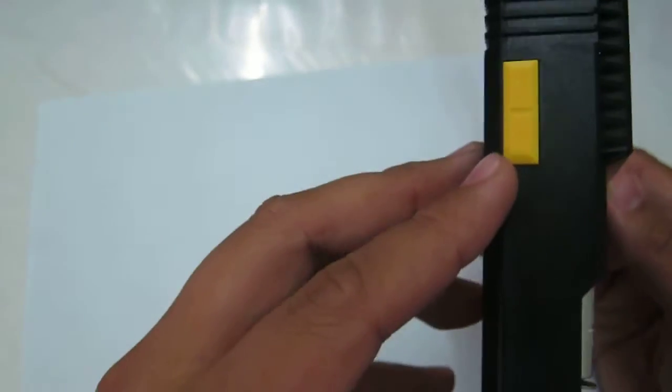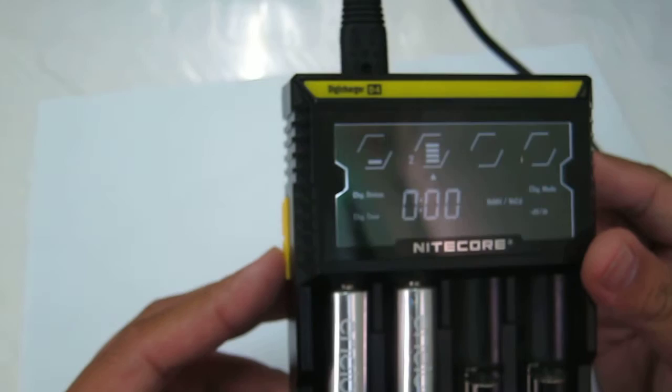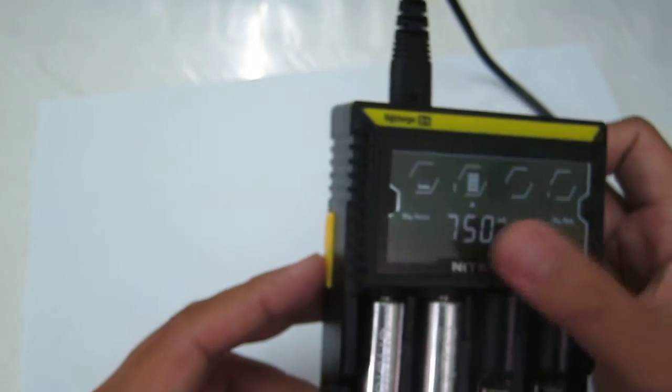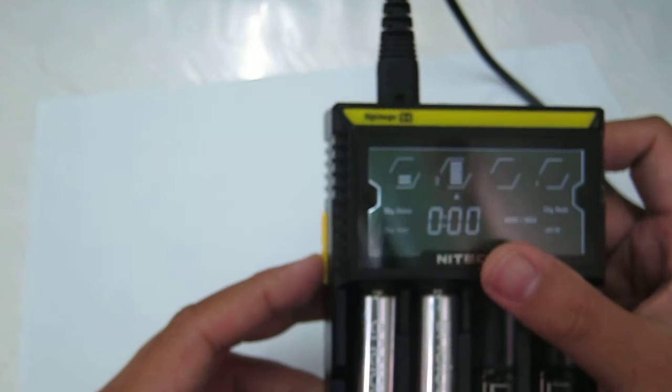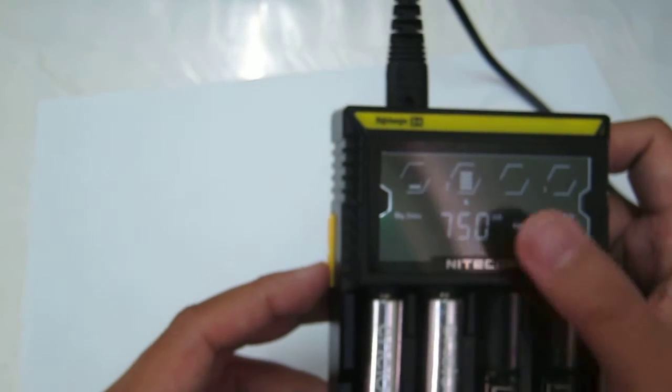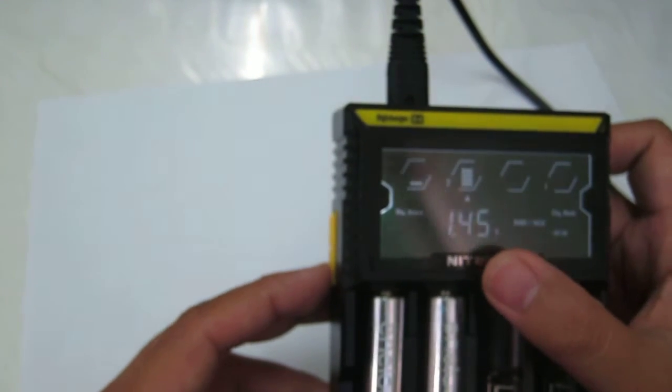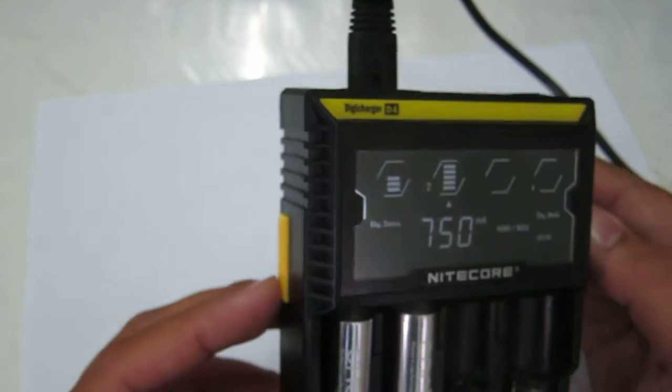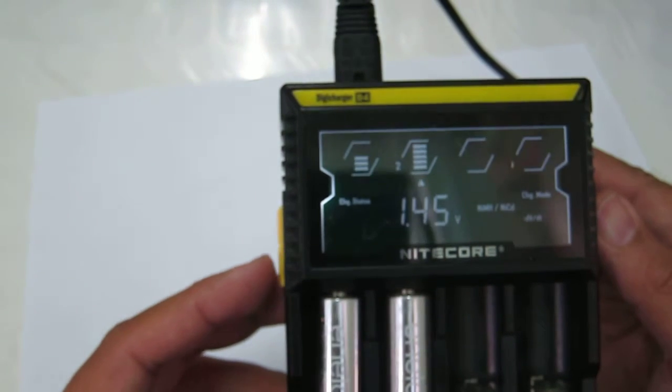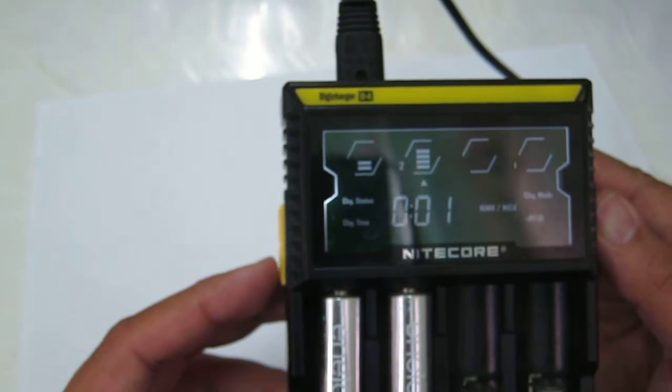The mode button lets you change your view. This is the charge time, this is the voltage, and then this is the charge rate which is 750 milliamps.